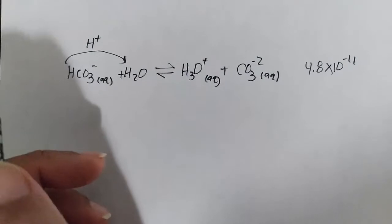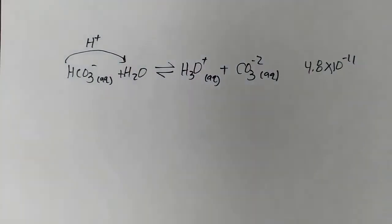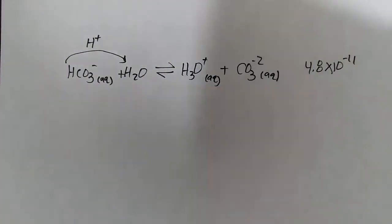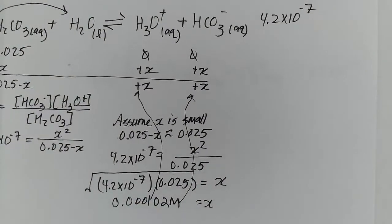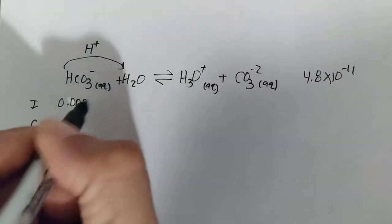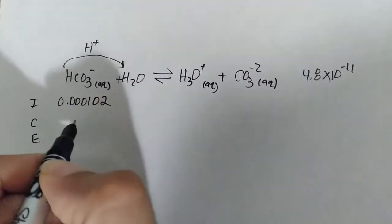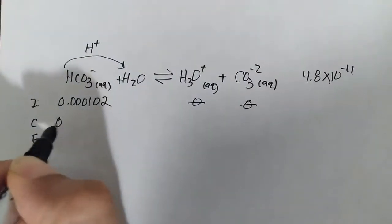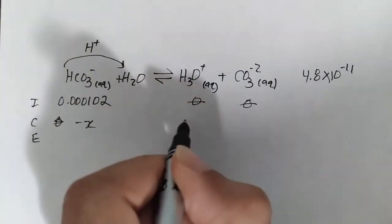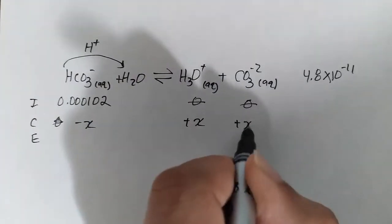What is our initial? Our initial here for bicarbonate is going to be 0.000102 - x. So 0.000102, that's going to be minus x, +x, +x.